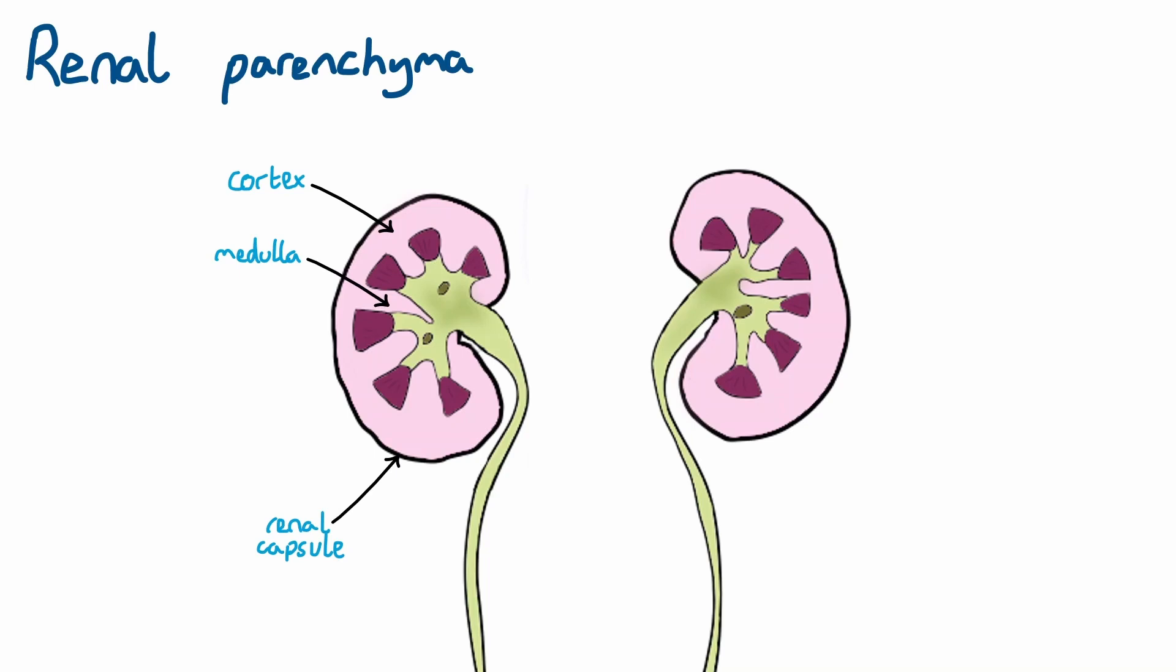The parenchyma is organized into multiple renal lobules, which are individual structures made of the outer cortex, surrounding a triangular portion of inner medulla, known as a renal pyramid.